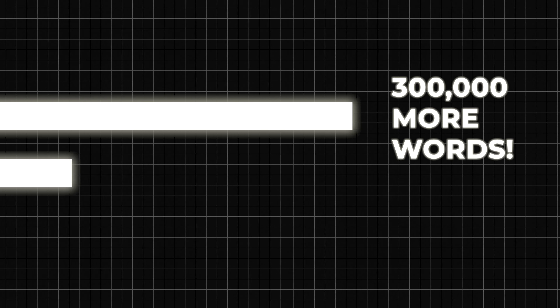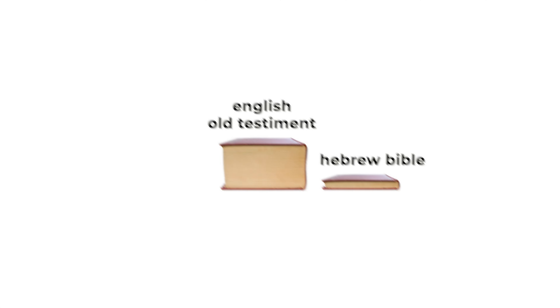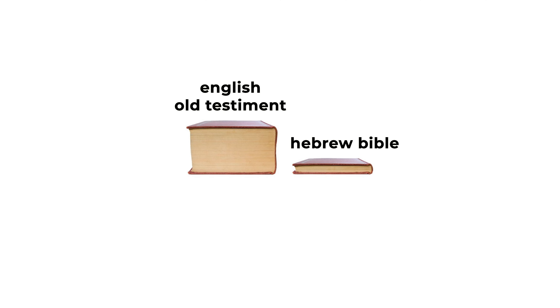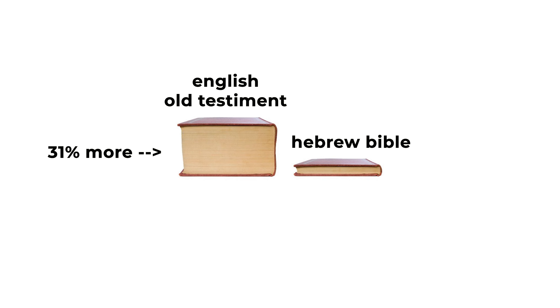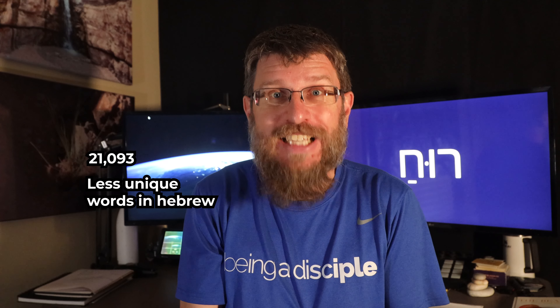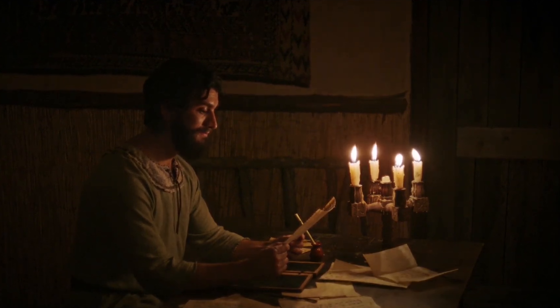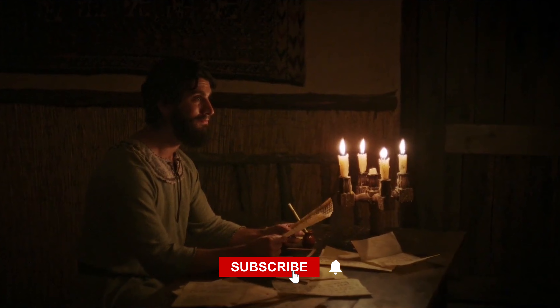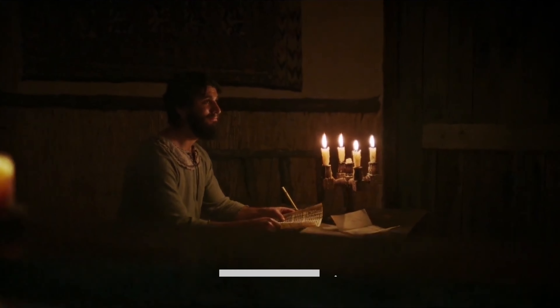Did you know that in the English versions of the Old Testament there are over 300,000 more words used than the ancient original Hebrew text? It's true — the English translators use over 31% more words than are in the Hebrew text. There are 2,193 fewer unique words in Hebrew than what the translators used in English. But why do the translators use far more English words than what the original Hebrew text has in it?